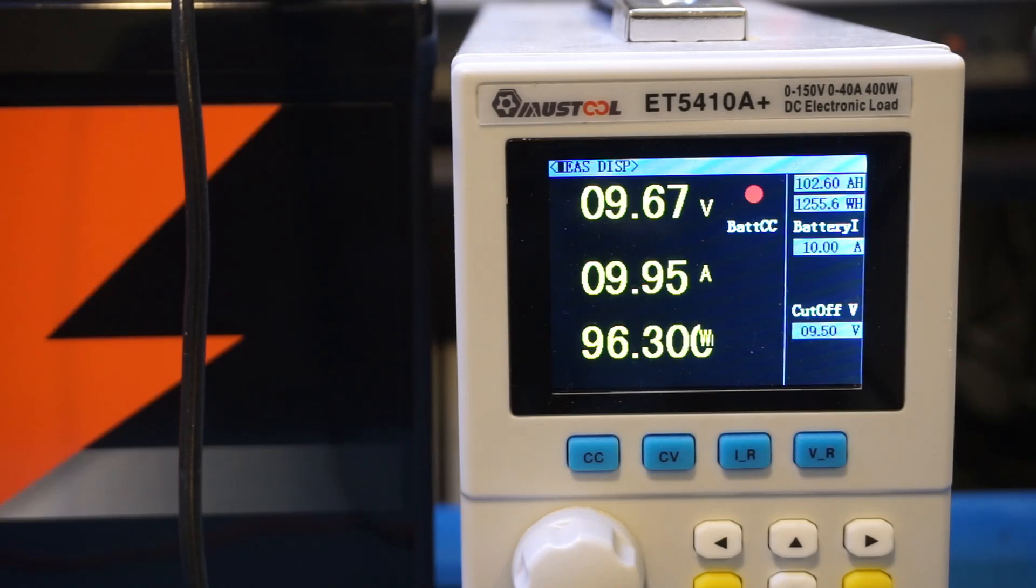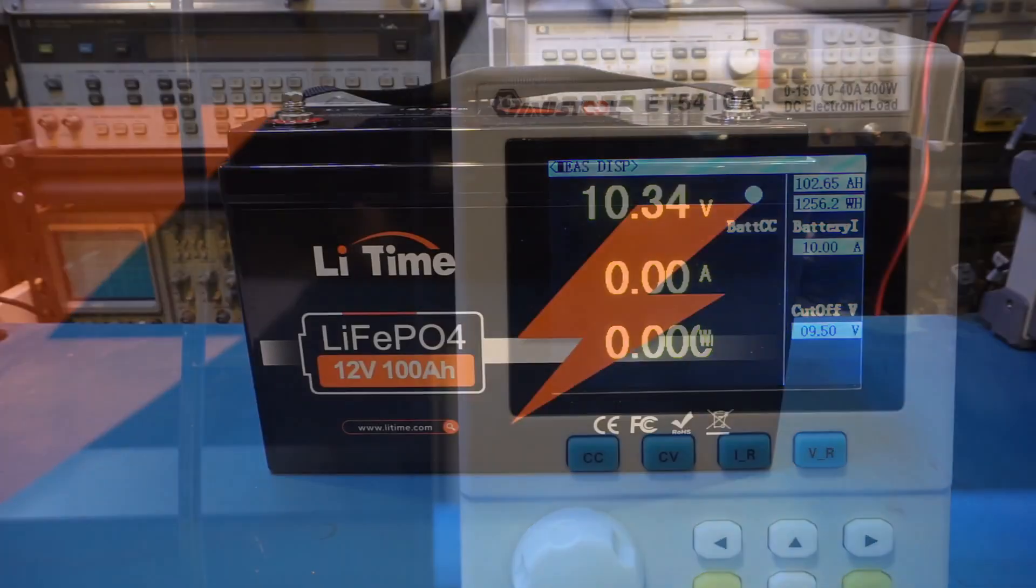For the discharging test, the cutoff voltage was set to 9.5V at the electronic load side. And while the test was running, I measured the voltage drop across the wires, which was just above 1V. So in theory, I probably could squeeze out a little bit more, maybe a couple more amp hours from the battery, as 10.5V is still above the minimum terminal voltage. Anyway, the point I was trying to make here is that the battery exceeded its rated capacity.